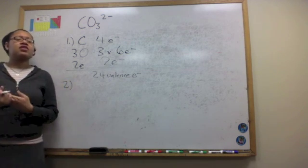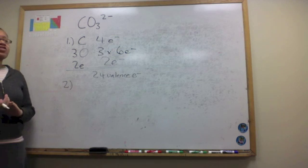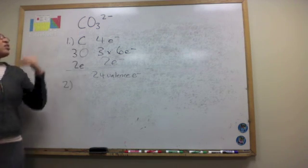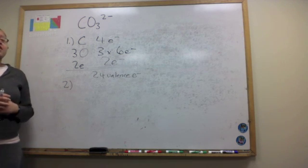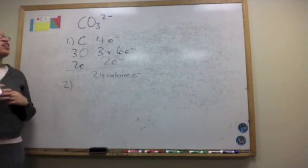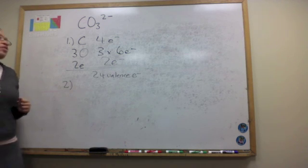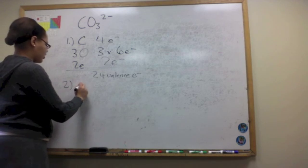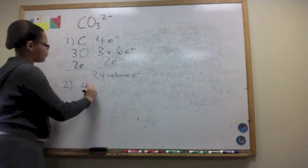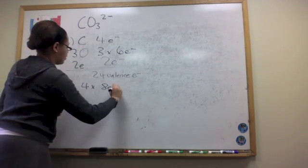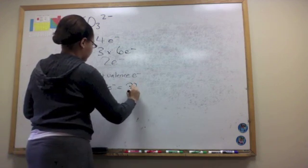Step 2: count the number of valence electrons each atom would like to have to be isoelectronic with a noble gas. None of our atoms in the carbonate ion is hydrogen, so each atom would like to have 8 valence electrons — a full octet. We take 8 electrons and multiply by 4 atoms, giving us a total of 32 electrons.